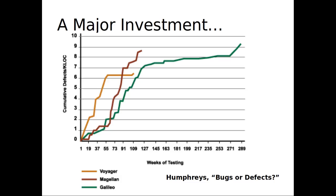Sometimes that data is public. This is data from NASA for three different space probes, and what it shows is a measure of number of defects located on the y-axis. This is cumulative defects per 1,000 lines of code. And on the x-axis, we have weeks. What are a couple features of this graph that are worthy of note?